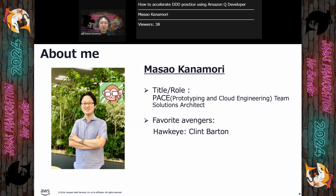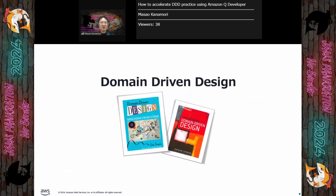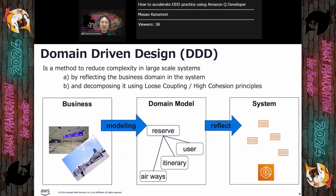Do you know what DDD is? DDD is short for domain-driven design. DDD is a software design approach to reflect the business domain in the system. DDD has many practices to build loose-coupling, high-cohesion systems. As a result, DDD supports us to reduce complexity in large-scale systems. It's very important for modern application development because our systems are becoming larger and more complex.